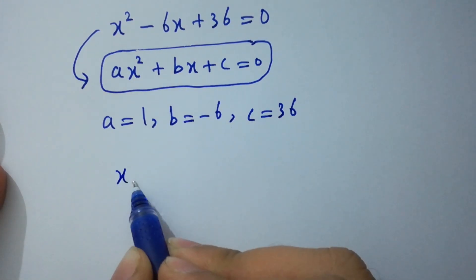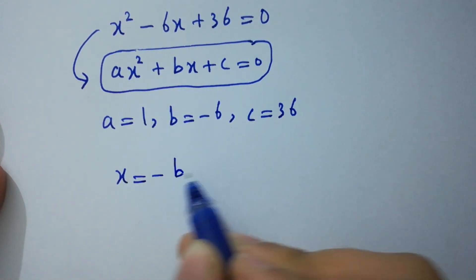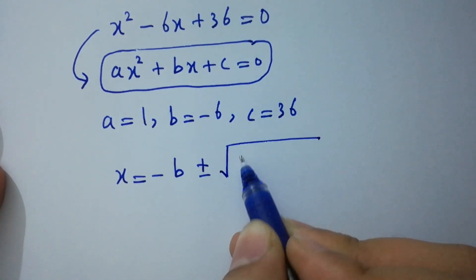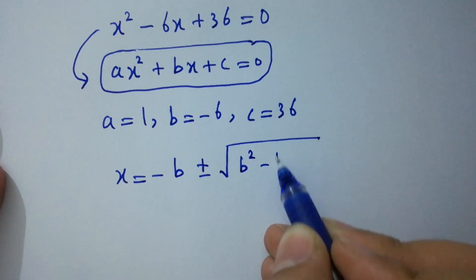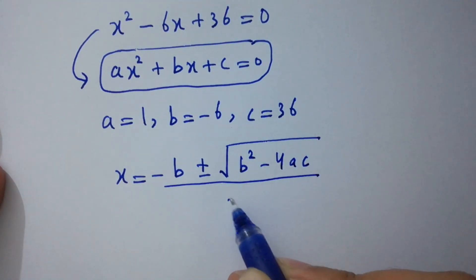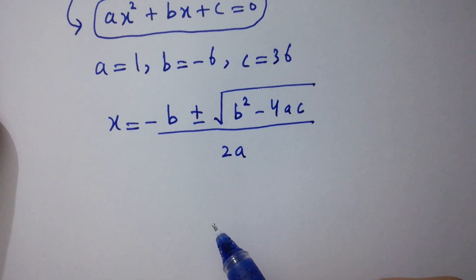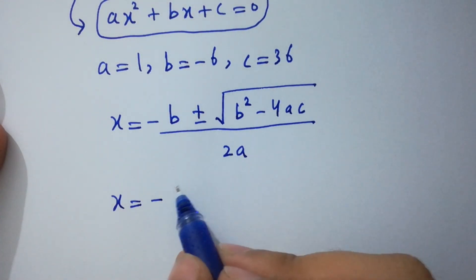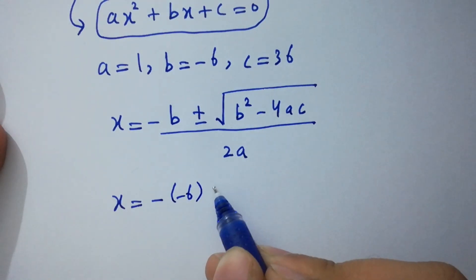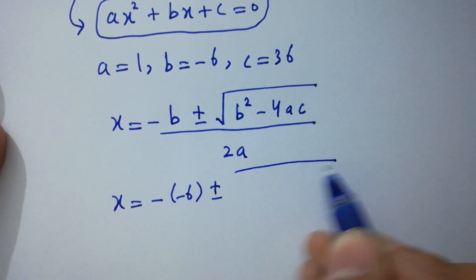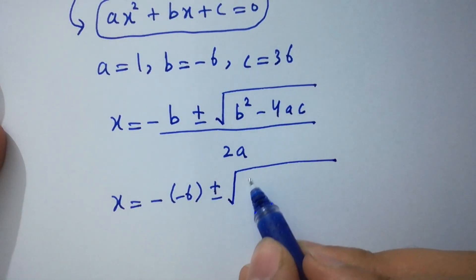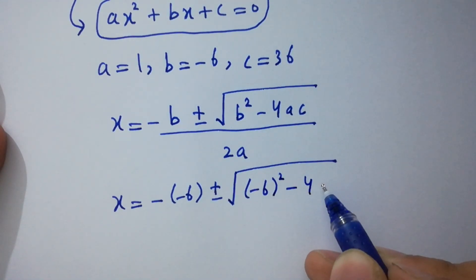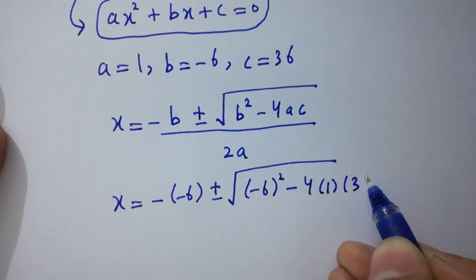The quadratic formula gives x equals minus b plus or minus square root of (b squared minus 4ac) over 2a. Substituting: b is minus 6, a is 1, and c is 36, so we compute b squared minus 4ac equals 36 minus 4 times 1 times 36.